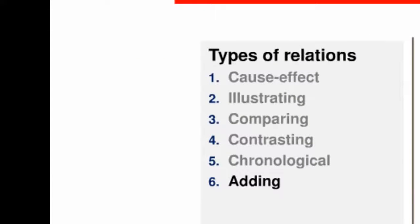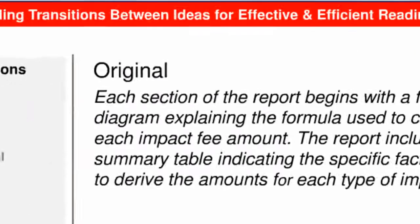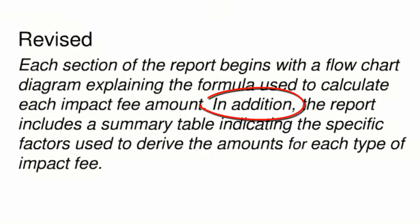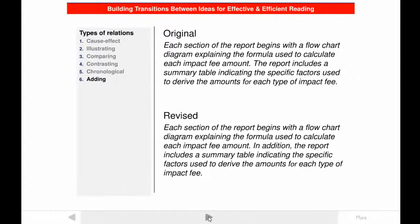The sixth type of relation that can be shown is adding. Look at another passage — the second sentence simply adds information to the first. This could be made more clear with a transition like "in addition." It's important to note that adding is the default relation, meaning the reader perceives each sentence in a document as adding information to the previous one. This means transitions that signify the adding relation are relatively less useful to readers than those that signify any of the other five relations, but they can still be used effectively.